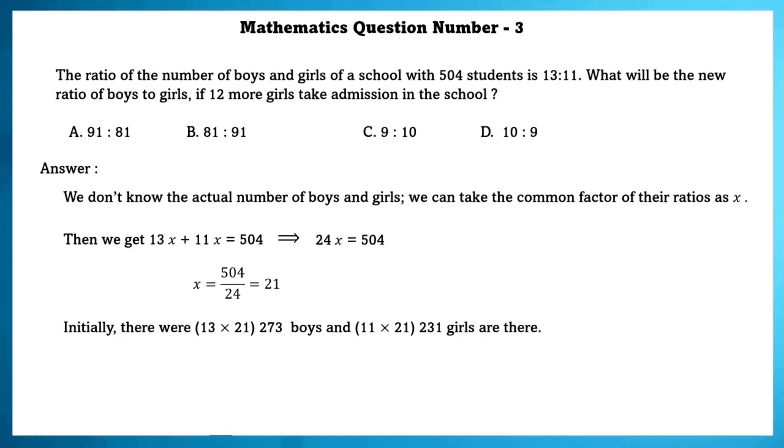Initially there were 13 into 21, 237 boys and 11 into 21, 231 girls. Now 12 more girls are added. Then the ratio will become 273 is to 243 which can be reduced to 91 is to 81.